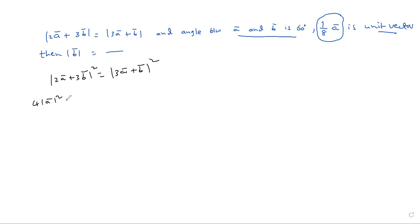4 into mod A square plus 9 mod B square plus 2 into... 2 into 3, 12 A bar dot B bar is equal to 9 mod A square plus mod B square plus 2 into 3, 6 into A dot B.